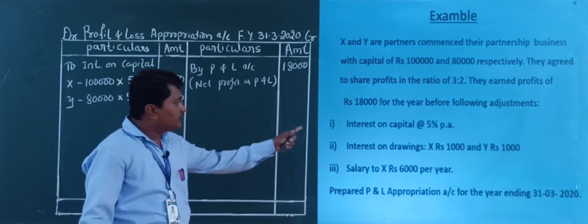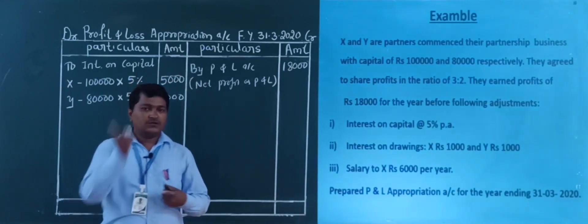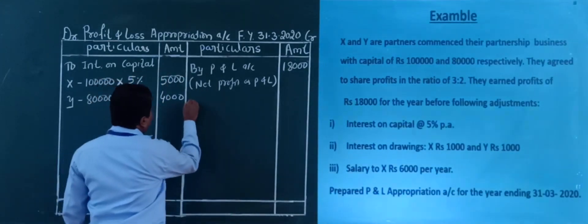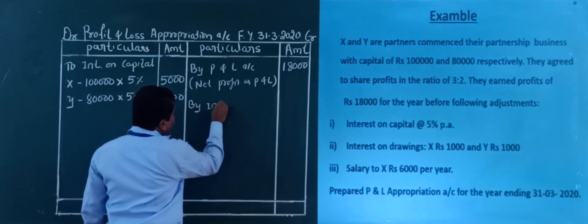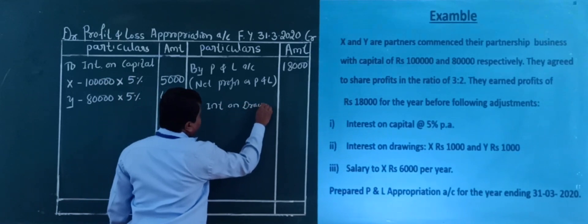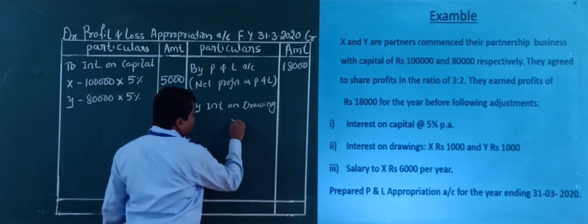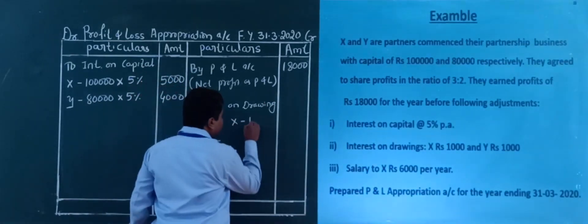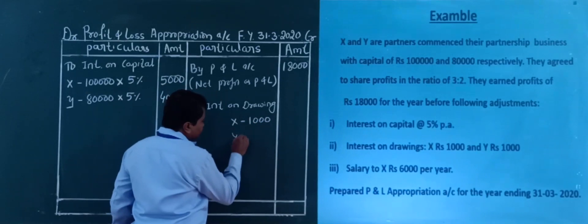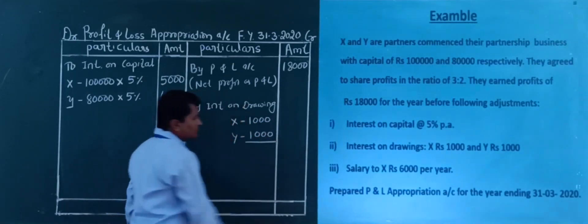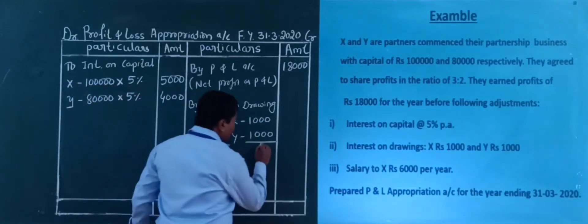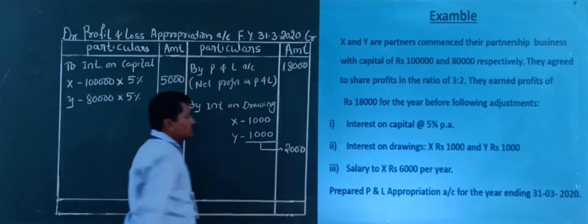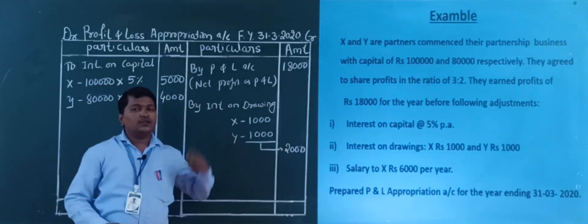Next is interest on drawings, which goes on the credit side of the profit and loss appropriation account. The interest on drawings values are given directly — no separate calculation needed. Interest on drawings: for X it is rupees 2,000, and for Y it is rupees 1,000.